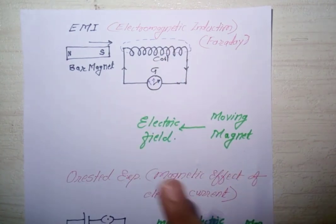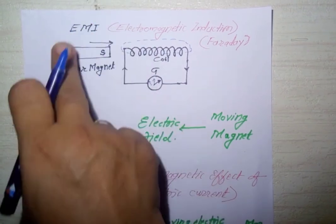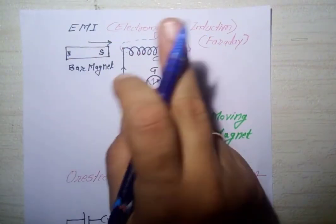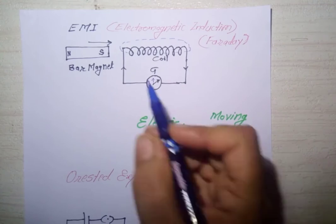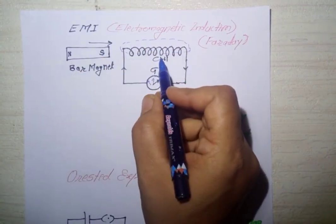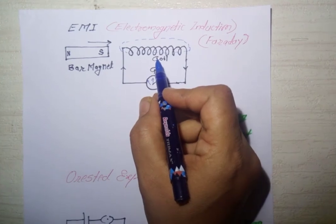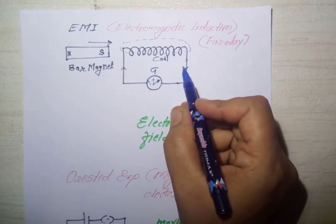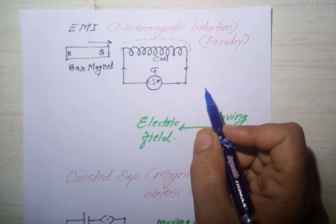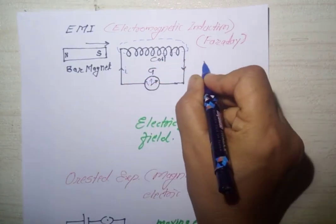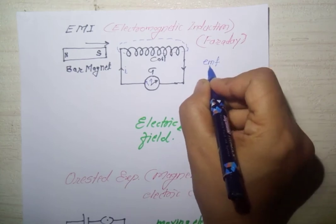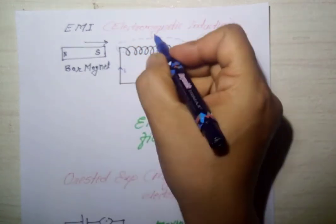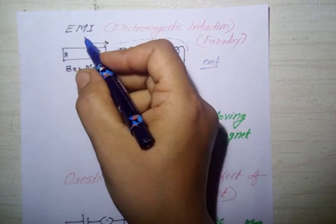Why does this occur? Because when the magnet is in motion, there is a change in the magnetic field associated with that coil. As the magnet moves, and we know there is always a magnetic field around the magnet, there is a change in magnetic field, which means a change in magnetic flux. The coil is associated with a change in magnetic flux, and that's why current is produced - called induced current. The induced EMF is also produced in that coil. This phenomenon of production of induced EMF in a coil when the coil is associated with a change in magnetic flux is called electromagnetic induction.